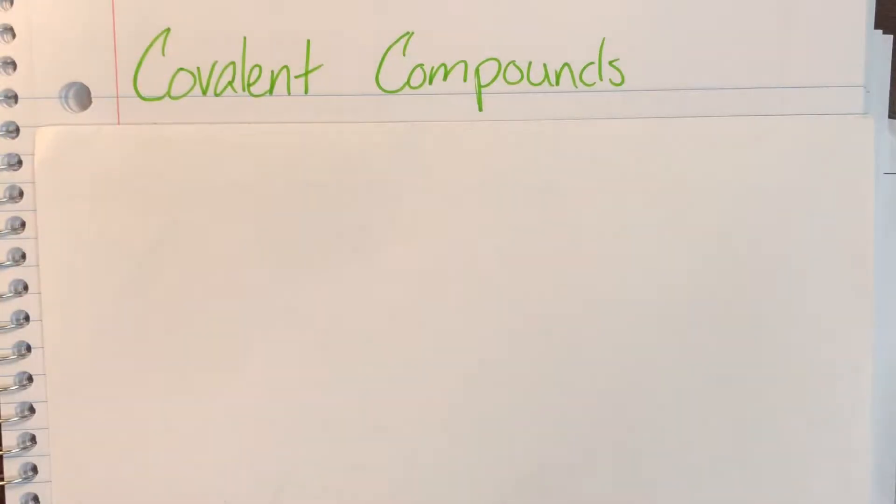Today we're going to be talking about covalent compounds, and covalent compounds are going to be compounds that are made from non-metals only.